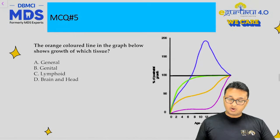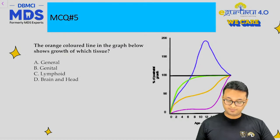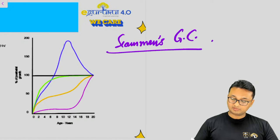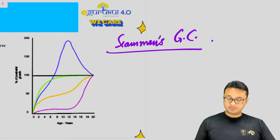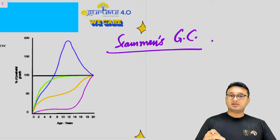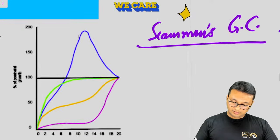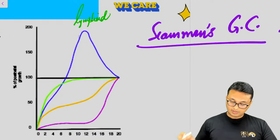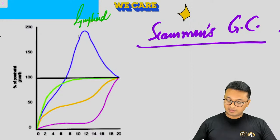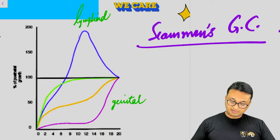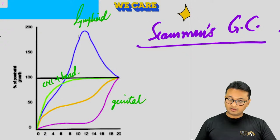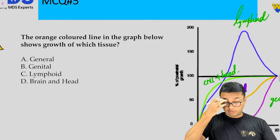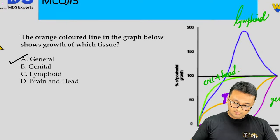The next question: the orange-colored line in the graph shows growth of which tissue? This is Scammon's growth curve. Scammon described four tissue types: the blue graph is for the lymphoid system, the magenta graph is for genital tissues, the green graph is for the central nervous system and head, and the orange graph is for general body structures.